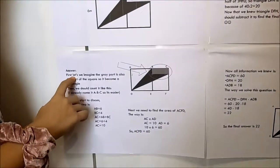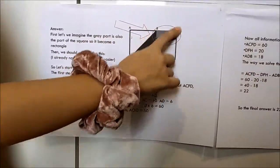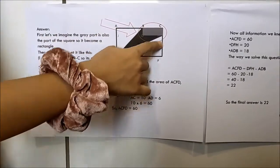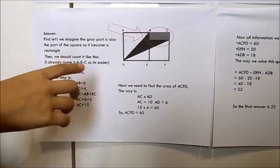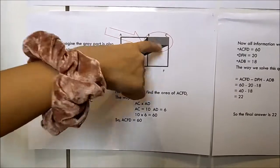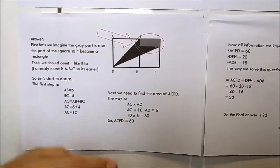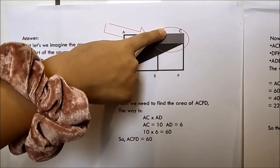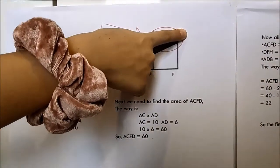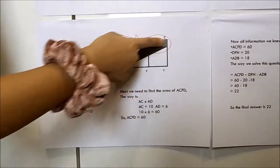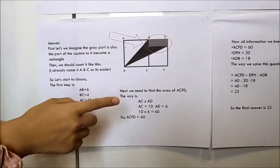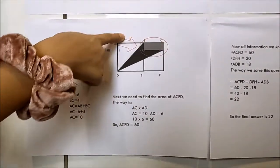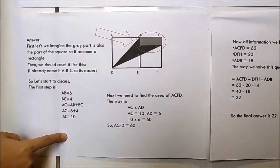The answer: first, let me imagine the gray part is also part of this square, so it becomes a rectangle. Then we label the points A, B, C, D, E, F, G to make it easier. The first step is: we know that AB is 6 and BC is 4, and we need to find AC. So AC equals AB plus BC, which is 6 plus 4, equals 10. So AC is 10.